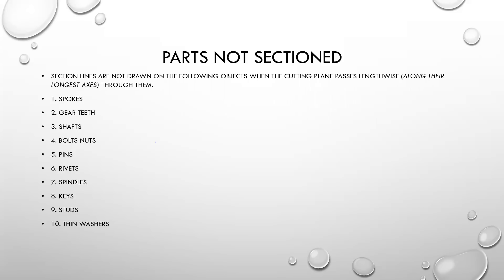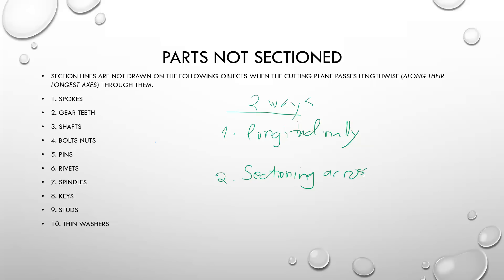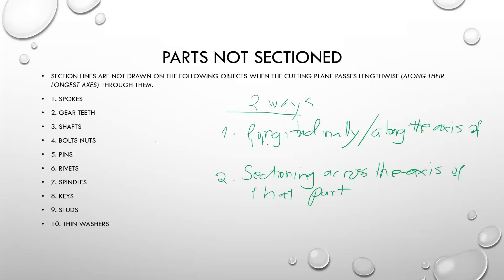When considering parts to section or not section, there are two main ways you look at those parts. The first one is whether the part is being sectioned longitudinally — that is, along the axis of the part — or whether the part is being sectioned across the axis of the part.